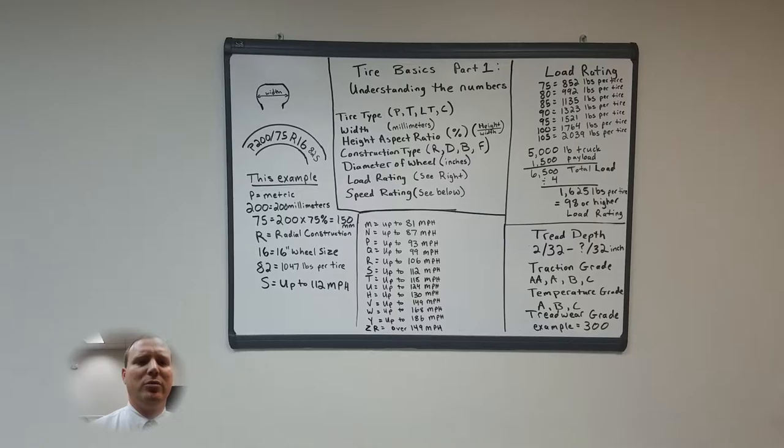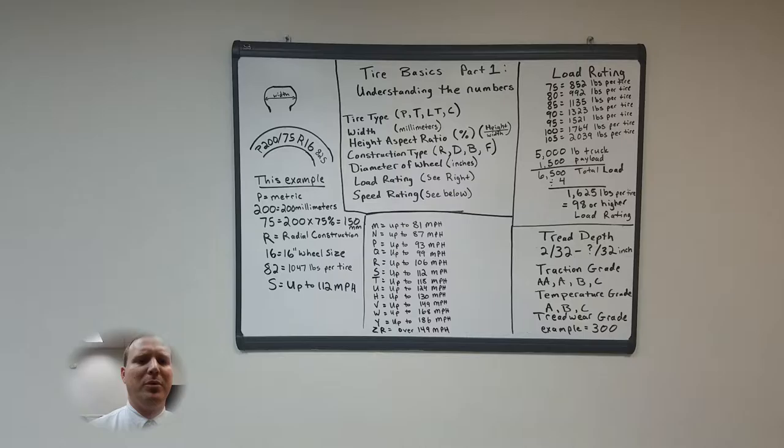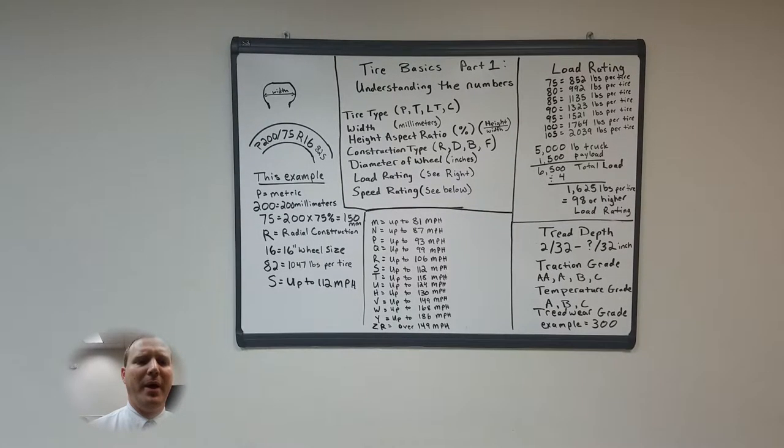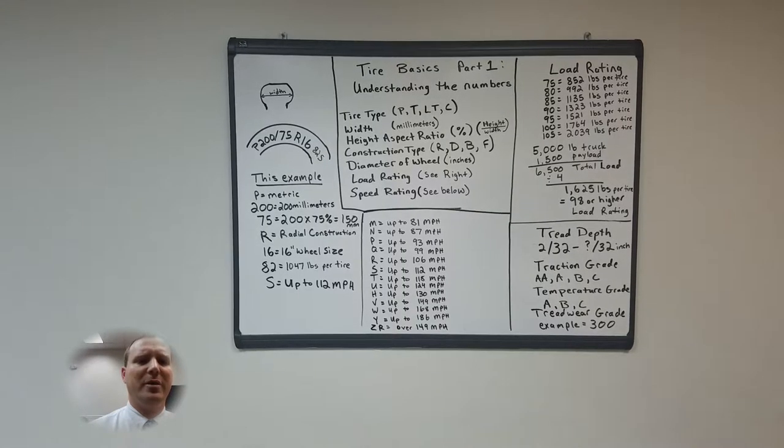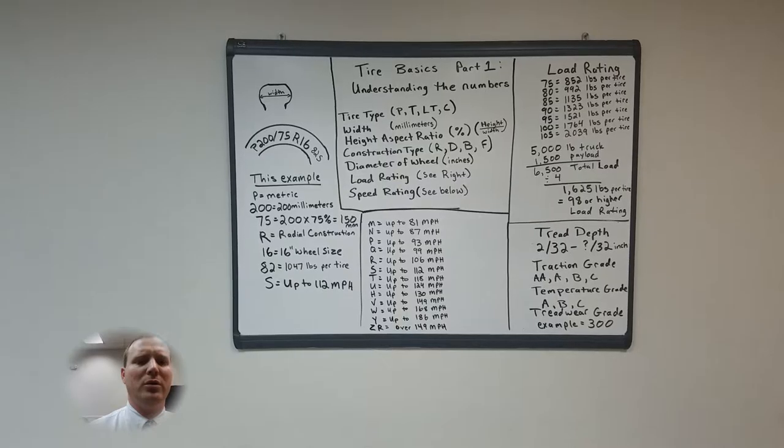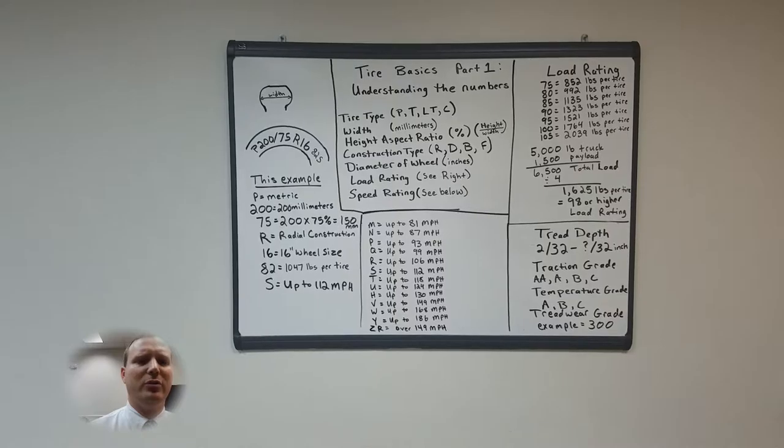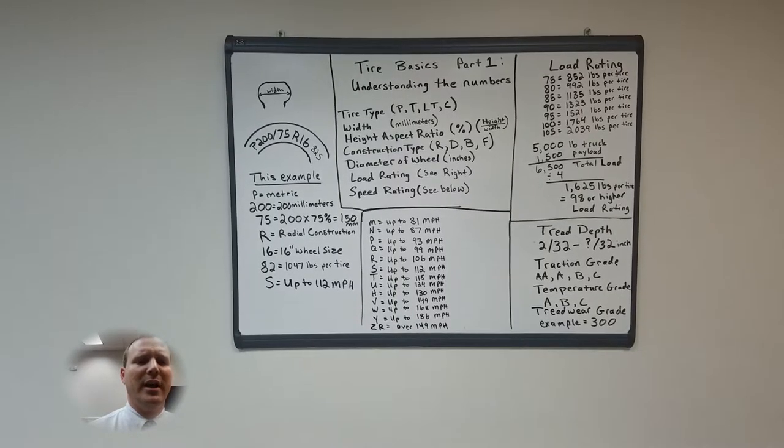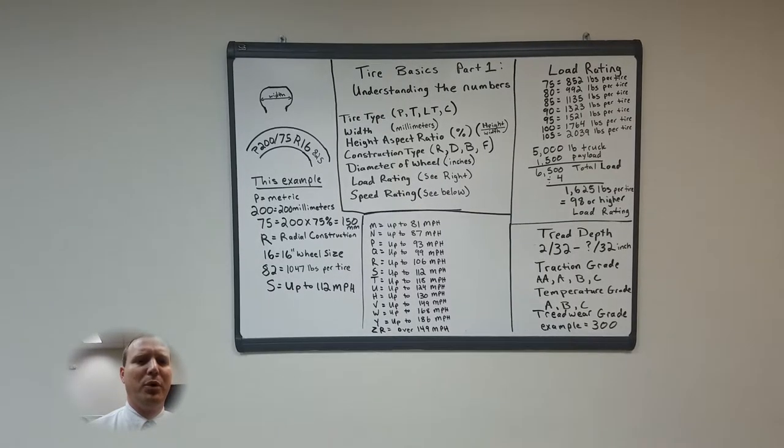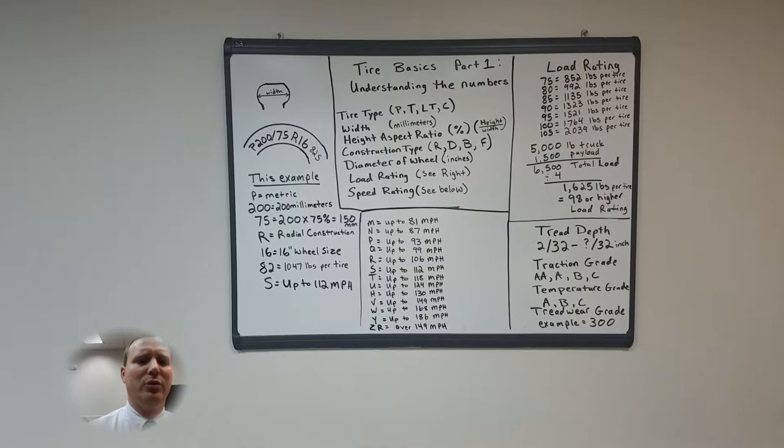To calculate your load rating that you need for your vehicle take the total vehicle weight in this example is 5,000 pounds. Add your total possible payload including all passengers in this example is 1,500 pounds. That gives you a total load of 6,500 pounds since there are four tires on most vehicles divided by four and that gives you a load capacity of 1,625 pounds per tire. On the load rating chart this is a 98 or higher load rating.